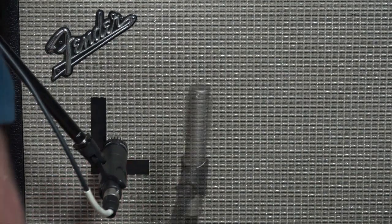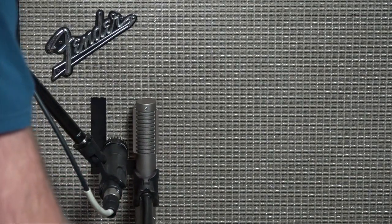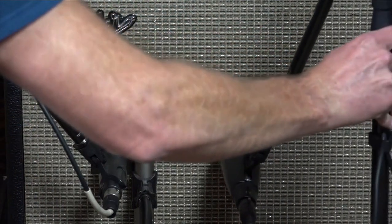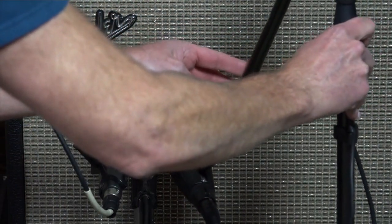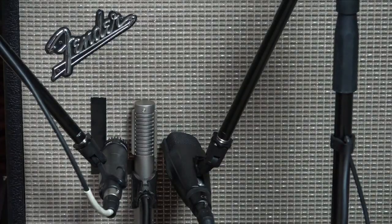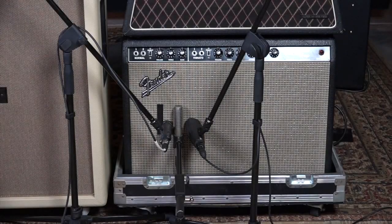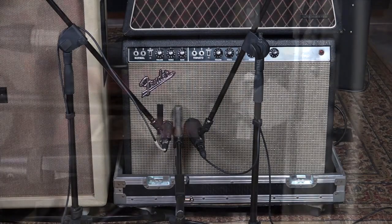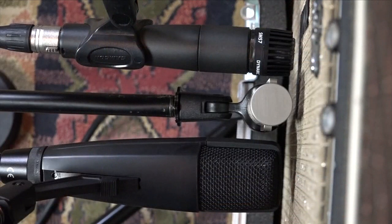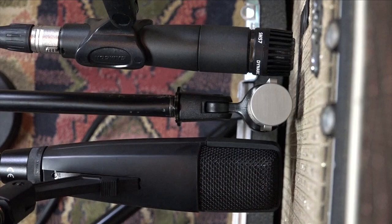I'll place the Royer right in the middle of the dust cap and then the 421 just off to the right. So this is what it looks like when we mic up all of those three different microphones together, and if we were to take a top view, you can see they're all lined up so we won't have any phase issues at all. Let's have a listen to all of them mixed together.